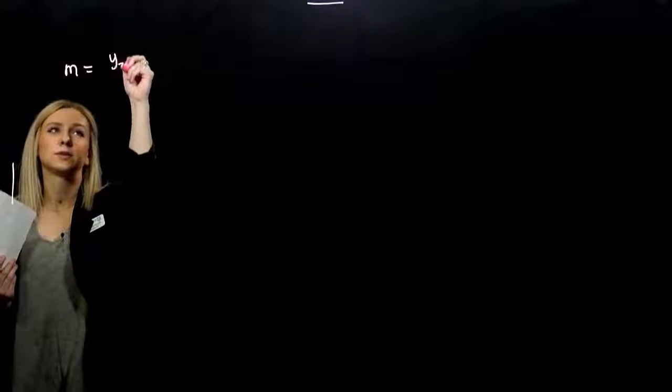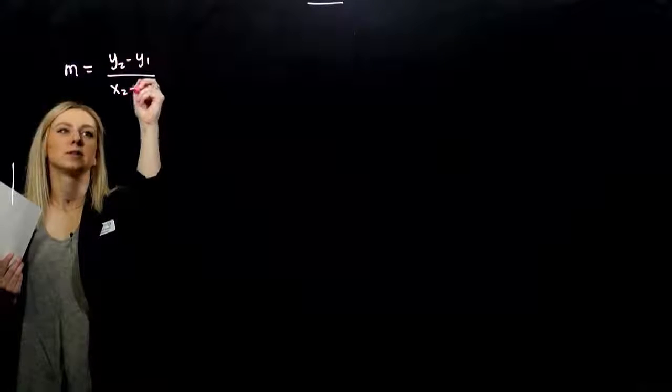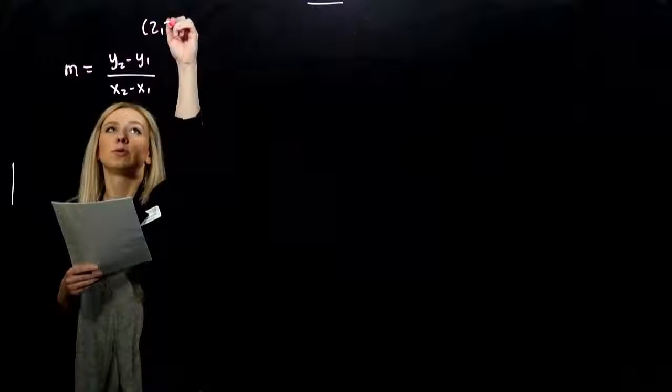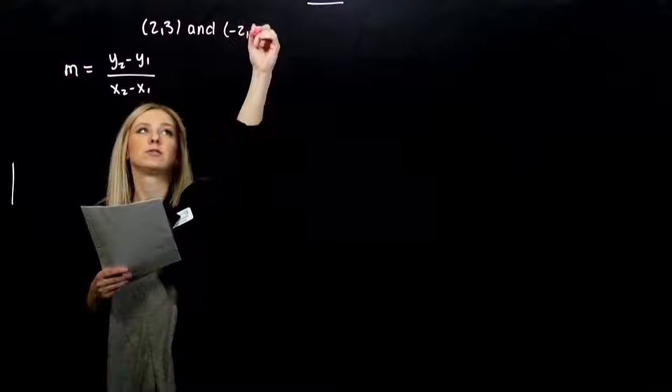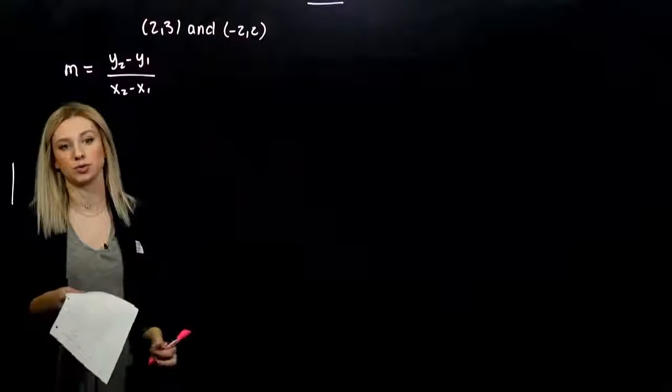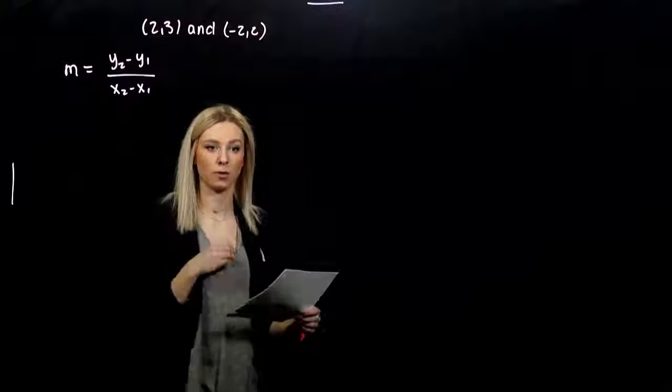What do you notice about the next example? We want to find an equation of the line containing the points (2, 3) and (-2, 2). We're given two points and don't have any information about the slope or the y-intercept — just two random points the line is going through. But we can take those two points and figure out the slope, since slope is the difference between the y's over the difference between the x's. Then we have two points to choose from for anchoring and figuring out where the y-intercept is.